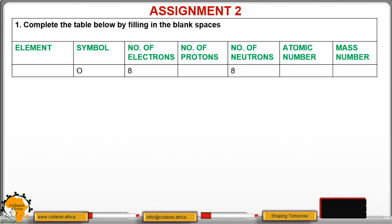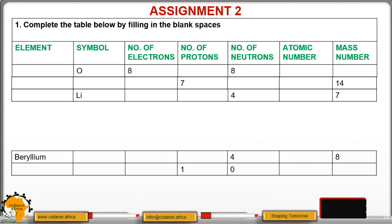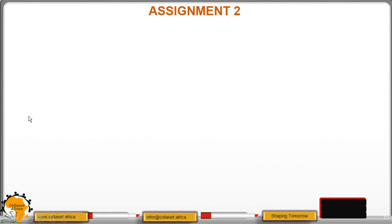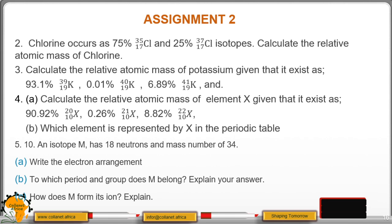Here is the assessment for you. Work it out — make sure you remember all the elements, and also try to know how to compute the atomic number, mass number, neutrons, protons, and electrons. This is the second part of the assignment. Work it out — you'll find it in the notes section. Finally, we have the third section of assignment two. Thank you, and I wish you the best.